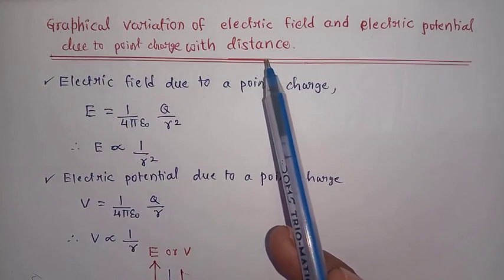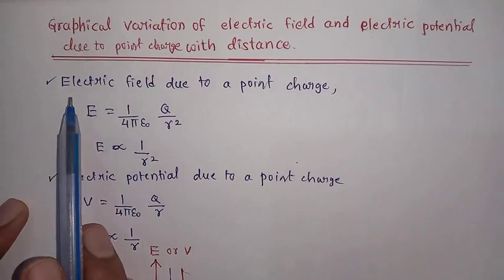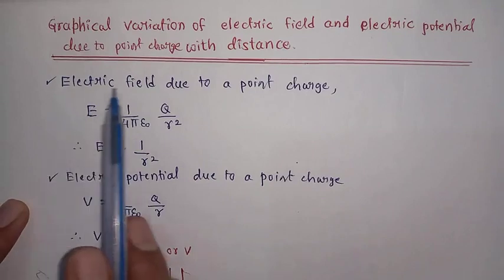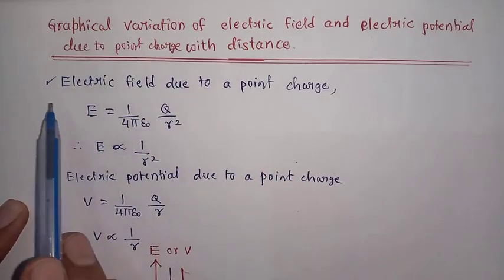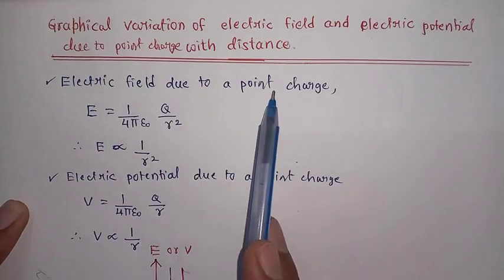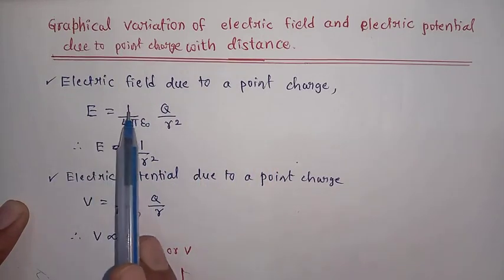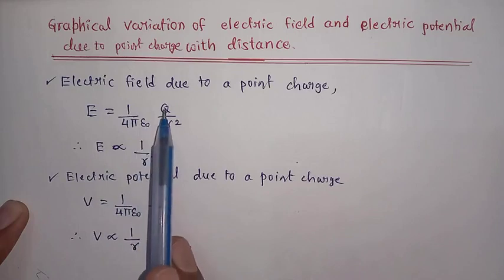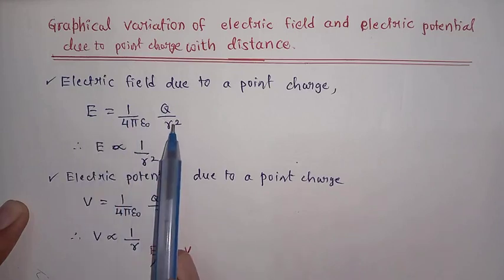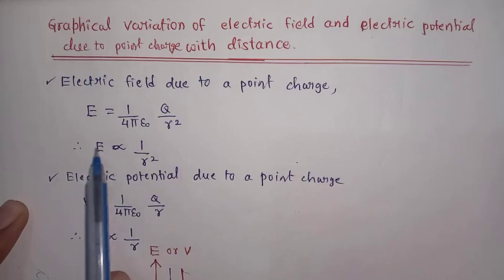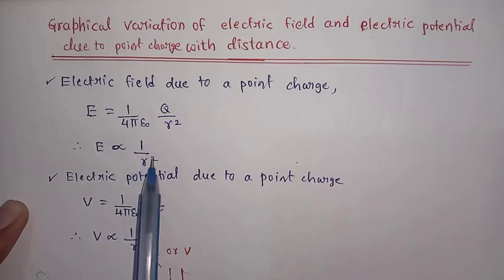We'll discuss that briefly. First, we see the expression for the electric field due to a point charge. The electric field is given by the formula: E equals 1 divided by 4 pi epsilon naught, times q divided by r squared. So by this equation, the electric field is inversely proportional to the square of the distance.